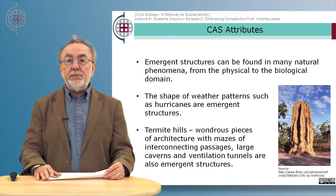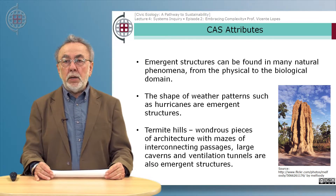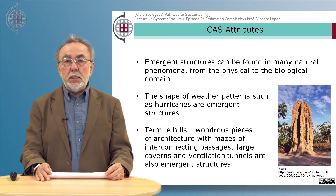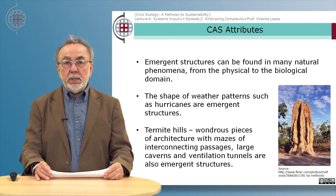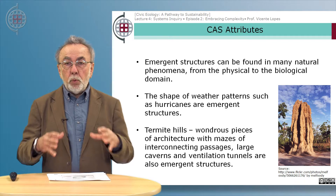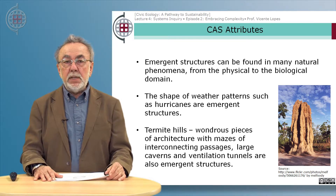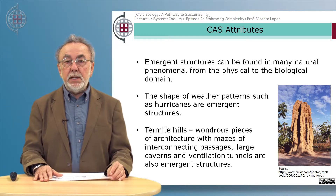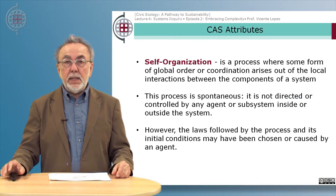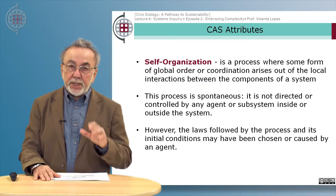Emergent structure can be found in many natural phenomena, from the physical to the biological domain. The shape of weather patterns such as hurricanes, for example, are emergent structures. Termite hills — wondrous pieces of architecture with mazes of interconnecting passages, larger caverns, and ventilation tunnels — are also examples of emergent structures.